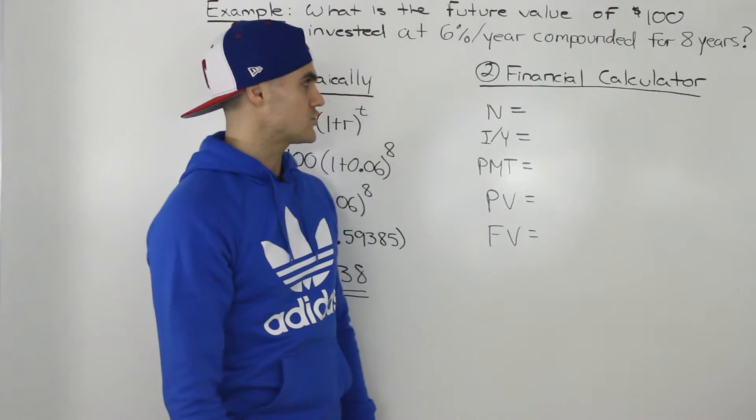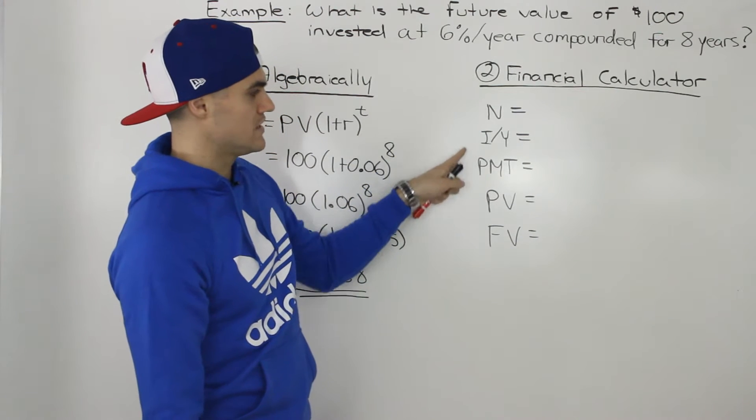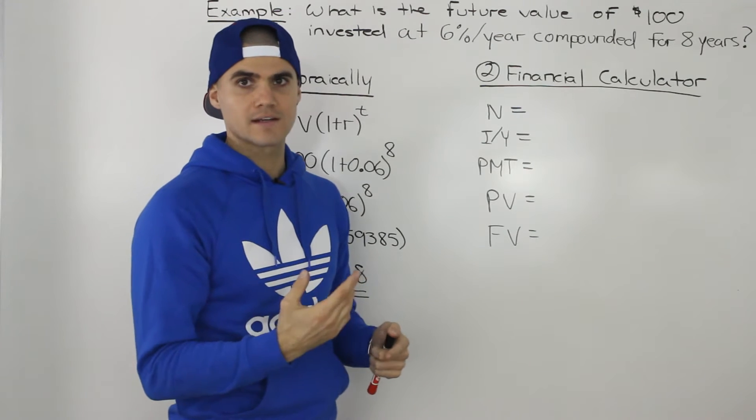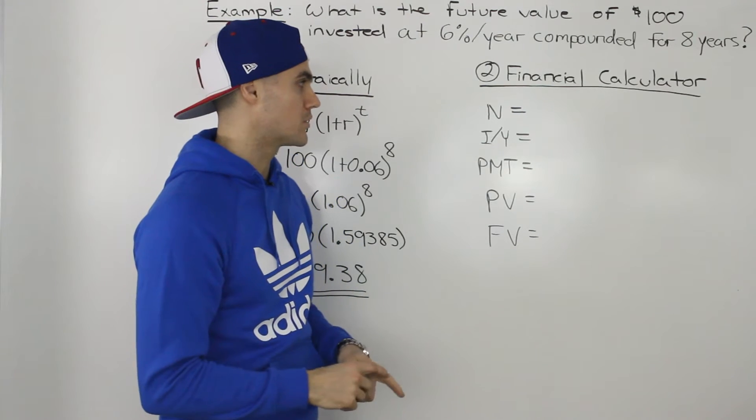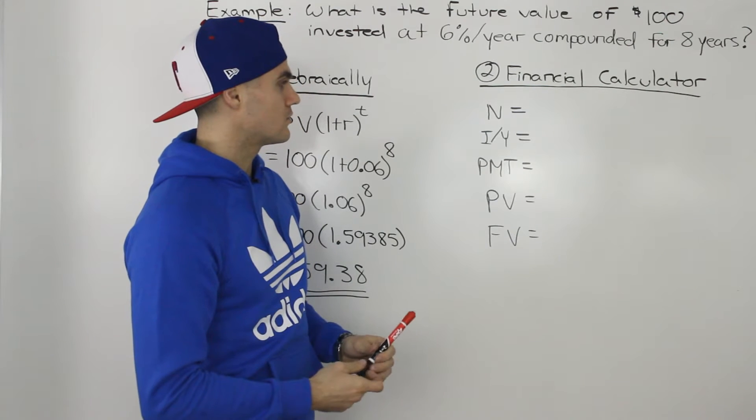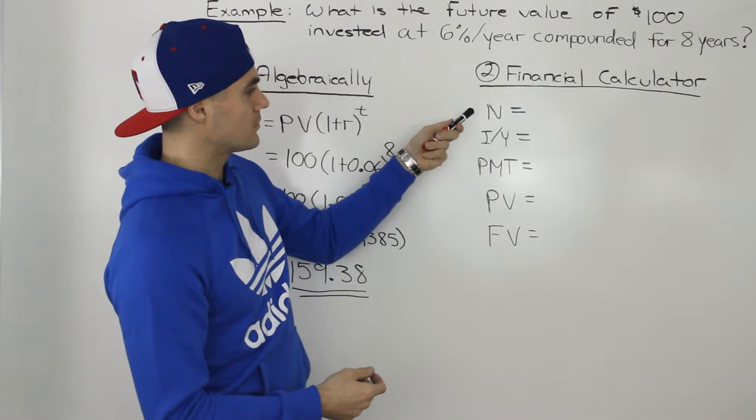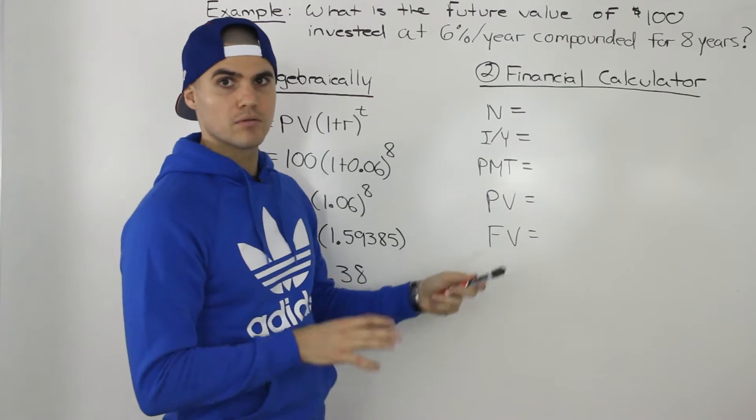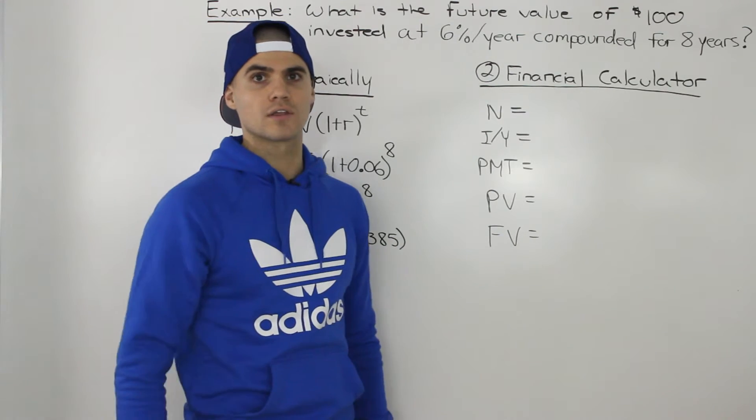Now, with a financial calculator, the way we would solve this is you want to look for these five buttons. Now, I'm not going to actually go through the mechanics of how to input the numbers, but I will tell you what the inputs are. So on your sheet, you always want to pretty much write out these five variables, and then fill them in before punching them into your calculator.